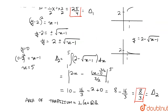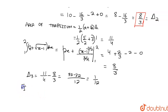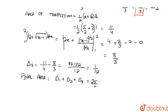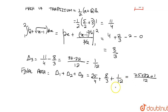Now we add all three parts. The required area = Delta 1 + Delta 2 + Delta 3 = 25/4 + 8/3 + 1/12. Taking LCM as 12: (75 + 32 + 1)/12 = 108/12 = 9. So our answer is 9. Thanks for watching, hope you liked the video.